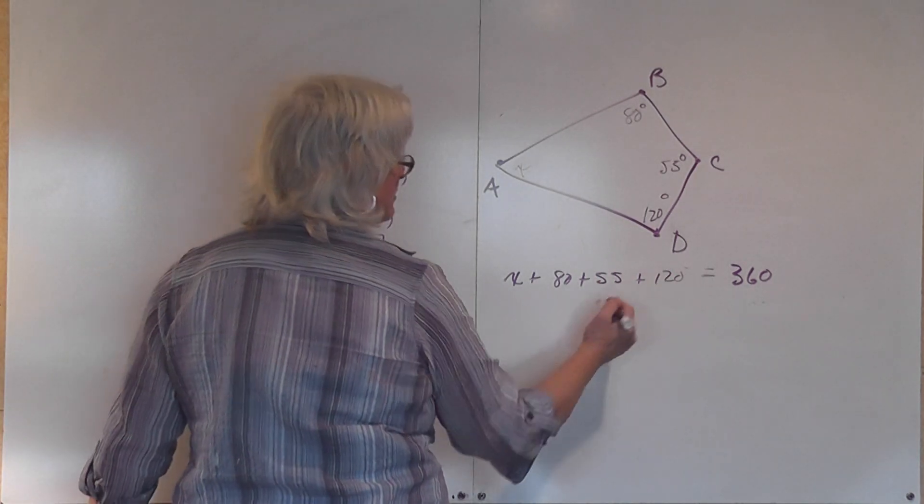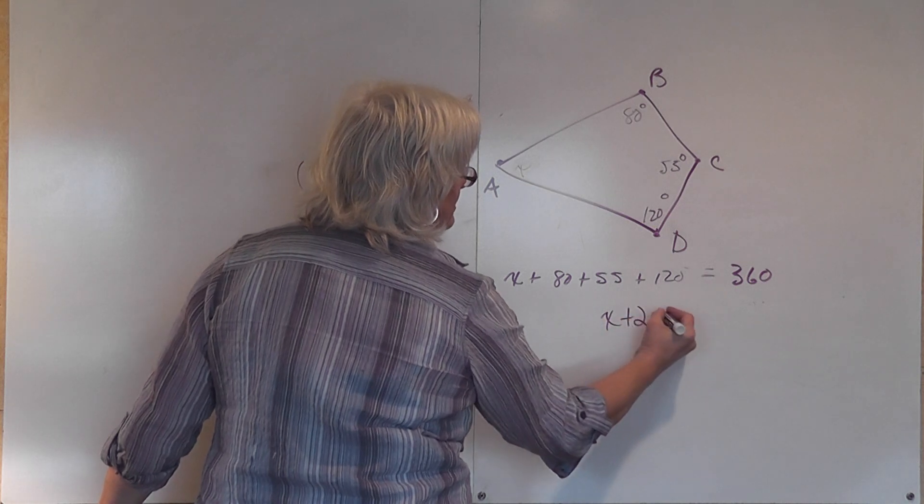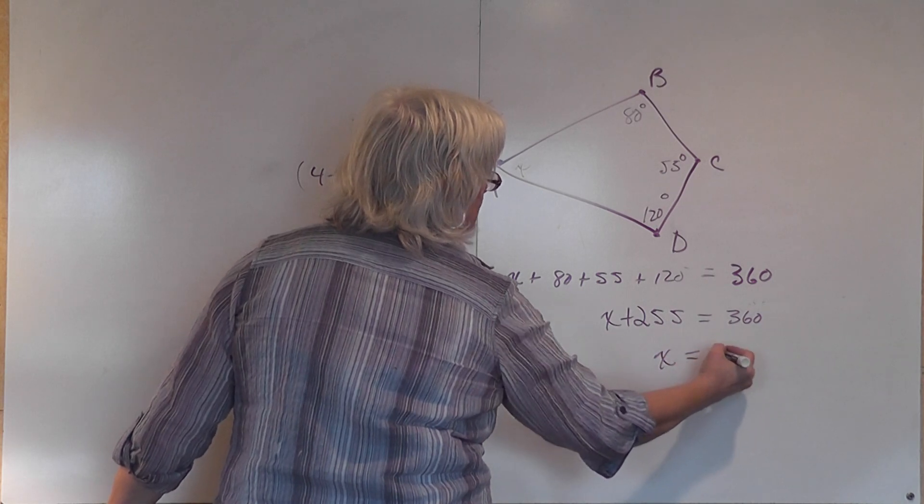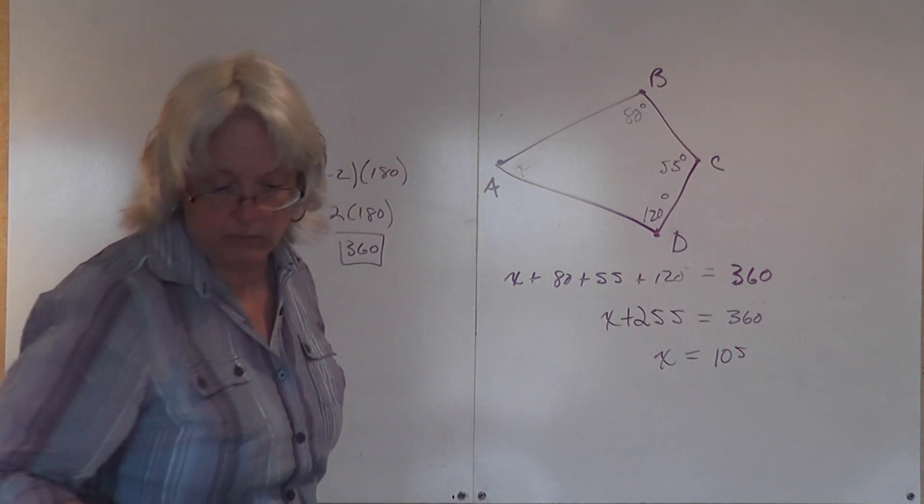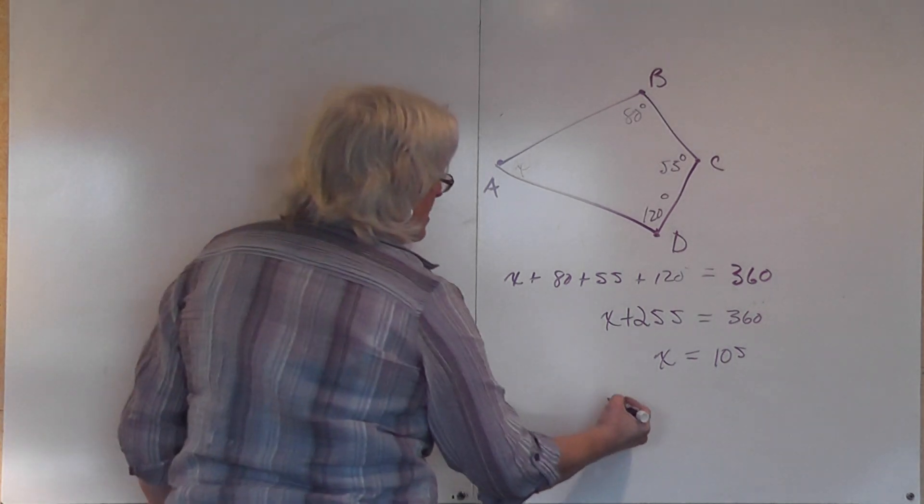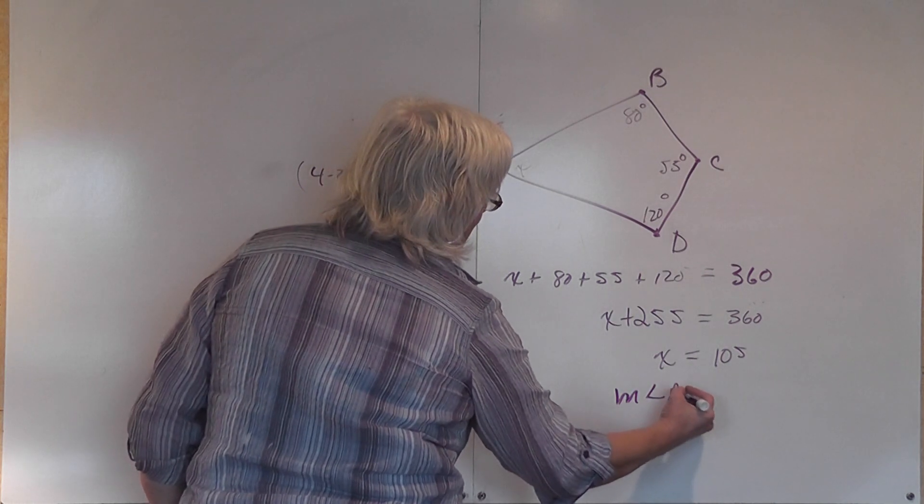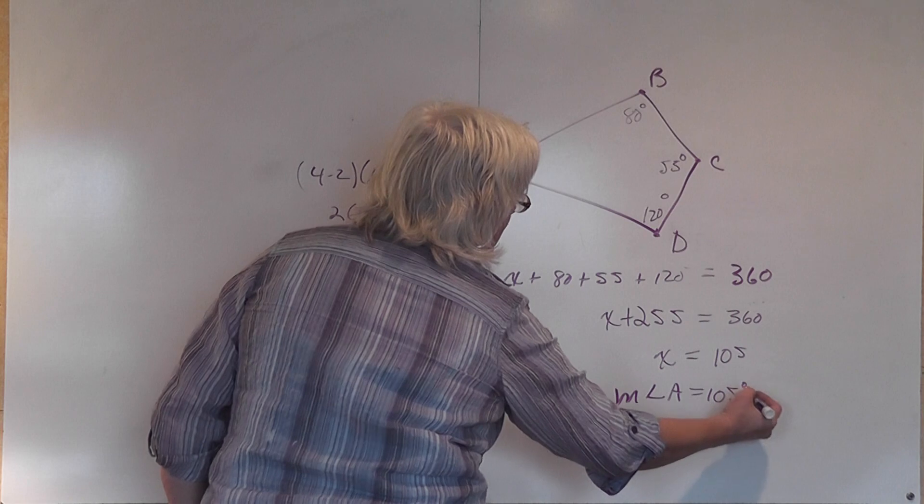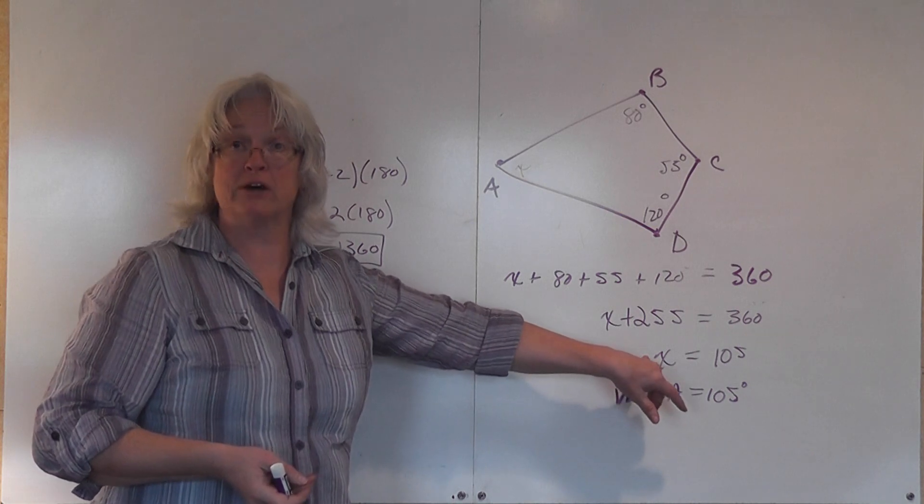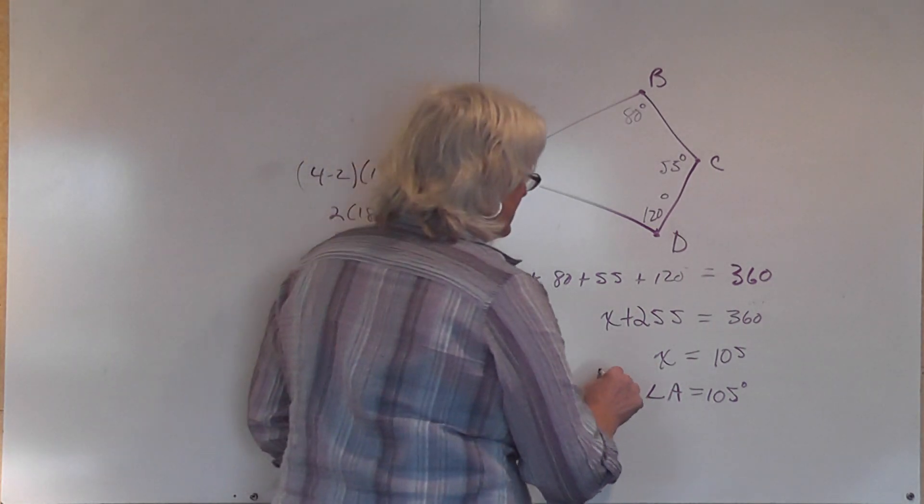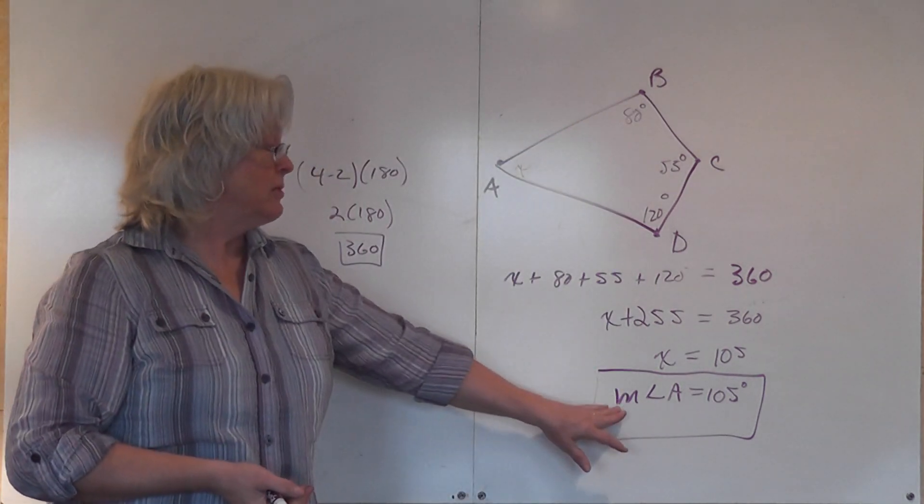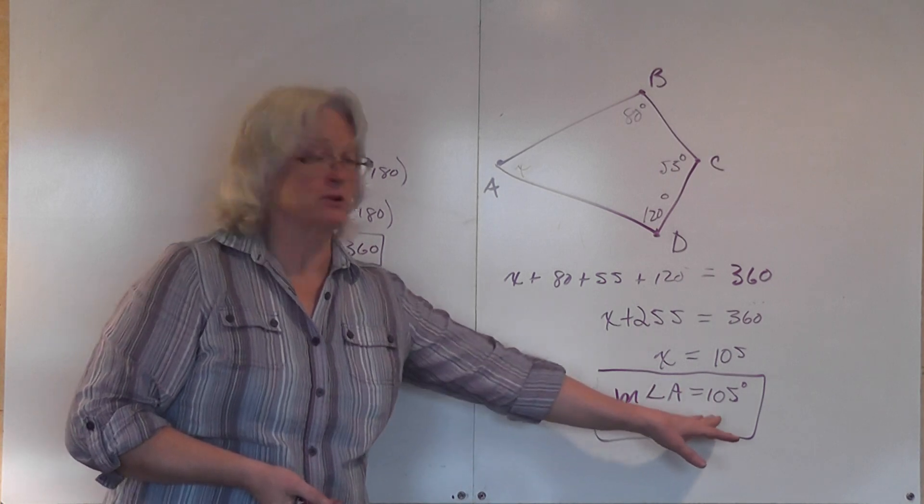We need to find out what this unknown angle is. So this unknown angle plus the measure of this, plus this, plus this, is going to be equal to 360. We just solve that as a basic pre-algebra statement. 80 and 120 is 200, 255. X plus 255 is equal to 360. X is equal to 105. So the measure of angle A is equal to 105 degrees. This is what you need to have your answer look like, because it asks you to find the measure of an angle. Measure of an angle is always given in degrees.